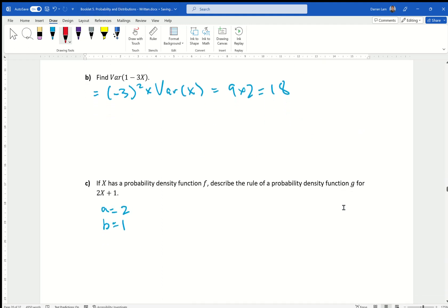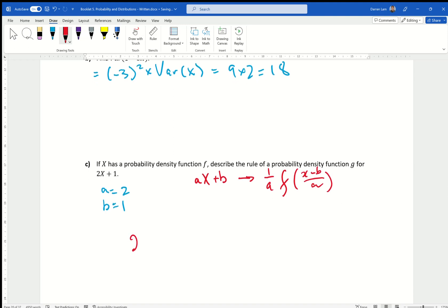All right, back to this question. So we have described the rule of a pdf for 2x plus 1. I know the formula from above that we've highlighted is a times x plus b. It becomes 1 over a f of x minus b over a. That's just the formula. So I can substitute it. I know that 2x capital X plus 1 goes towards g of x equals to 1 over 2 f of x minus 1 over 2. I'm just substituting the numbers right in. Questions?